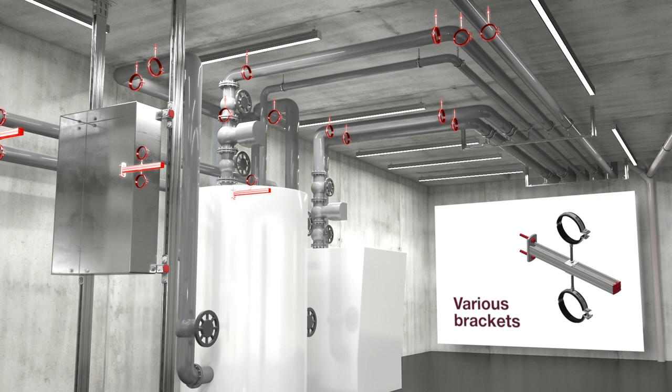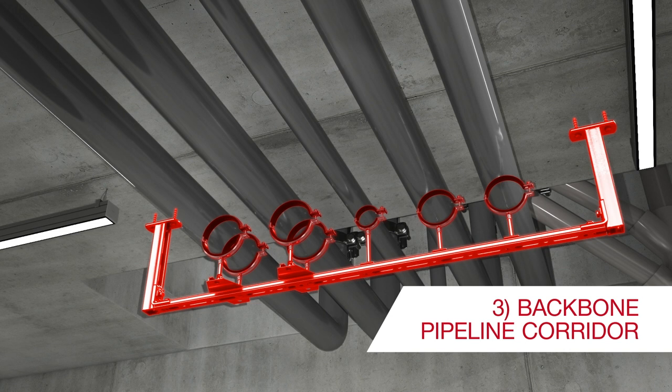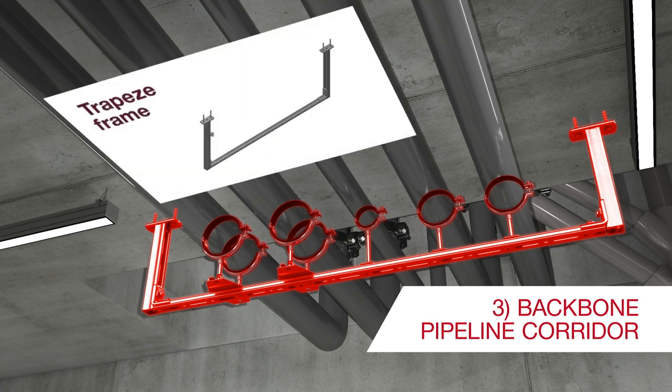Pipes then exit the plant room into the third phase, the backbone pipeline corridor. Here, pipes are typically supported on a common pipe support, in this case a trapeze frame.